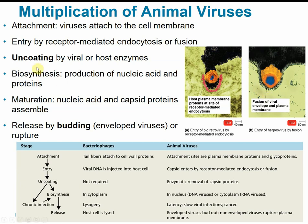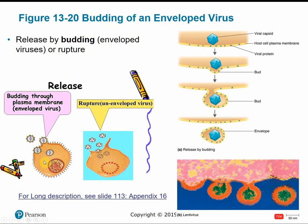After uncoating, biosynthesis produces the nucleic acid and proteins. Maturation assembles individual components to form fully developed virus particles. Finally, release: animal viruses can release by rupture, similar to the lytic cycle, or enveloped viruses may release by budding — because the viral envelope is the same type of lipid molecule as the host cell membrane, it can fuse outward through exocytosis out of the cell without rupturing the membrane.